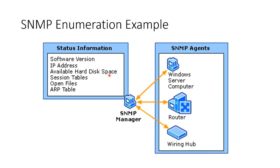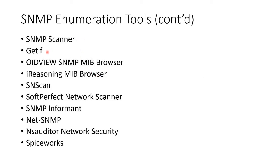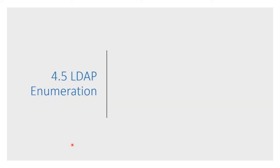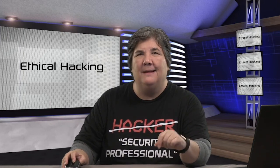Here's yet another example: a manager just asking questions — give me your software version, IP address, available hard disk space, tables, open files, ARP tables — and it just goes and queries all these devices. Various SNMP tools include OpUtils, SolarWinds (the venerable one that people use), SNMP Scanner, Getif (a nice free little tool), OIDView, iReasoning, SNScan, SoftPerfect, SNMP Informant, NetSNMP, NS Auditor, Spiceworks, Nagios, and Observium. So that is SNMP enumeration.